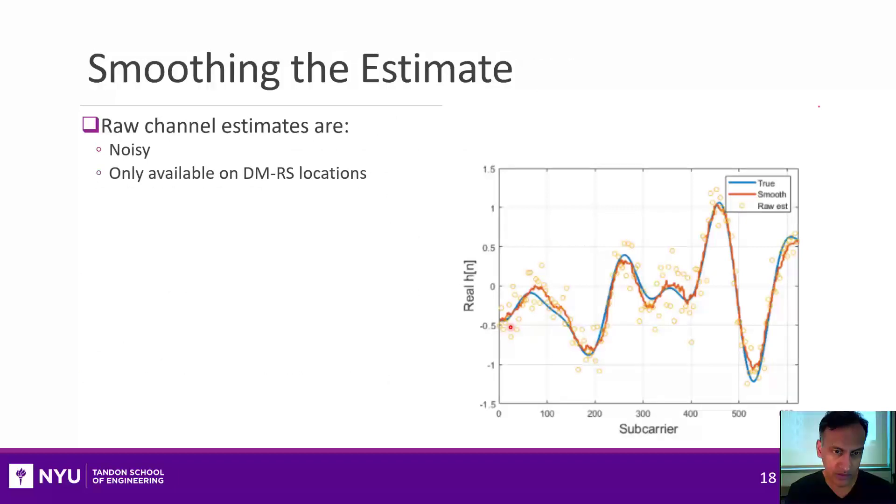That brings us to the following. So now we have got these raw channel estimates, but there are two problems. First of all, they can be pretty noisy, as you can see here. That's what's shown here now in the yellow color. And also, they're only available on these DMRS locations. And fundamentally, I want to interpolate to know the channel in other locations, where I want to have data that I want to use it for demodulation. So what we need to do is somehow smooth that estimate.